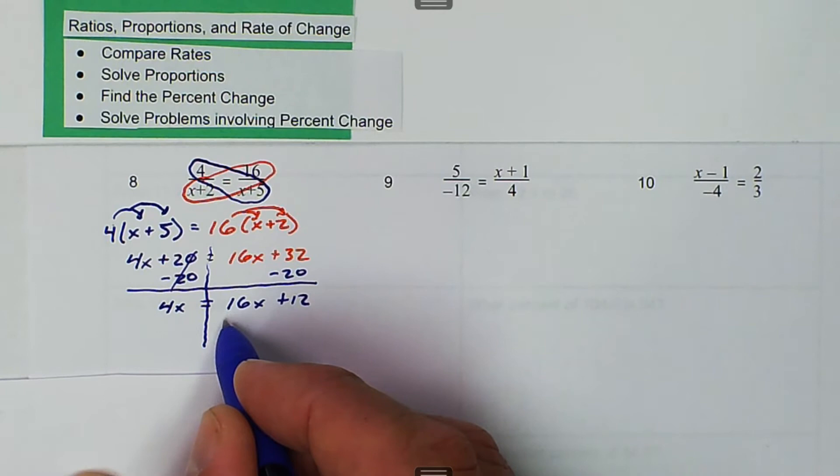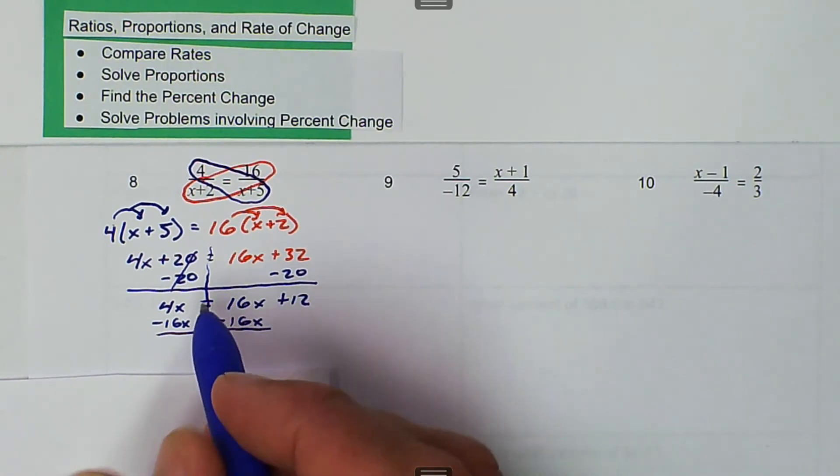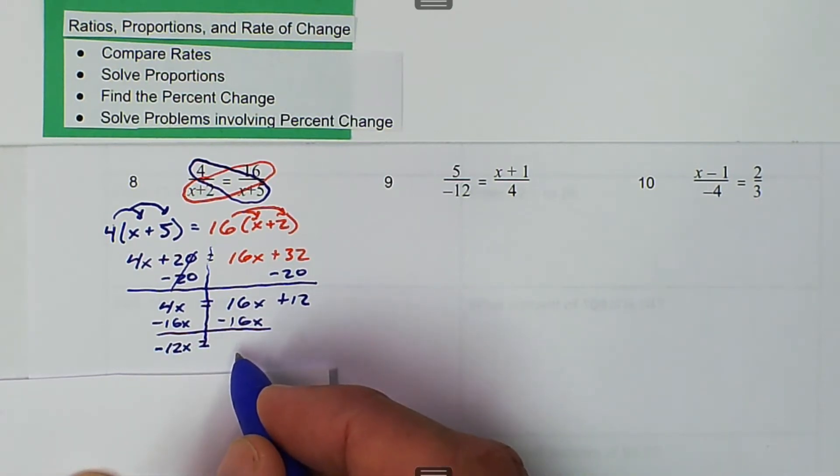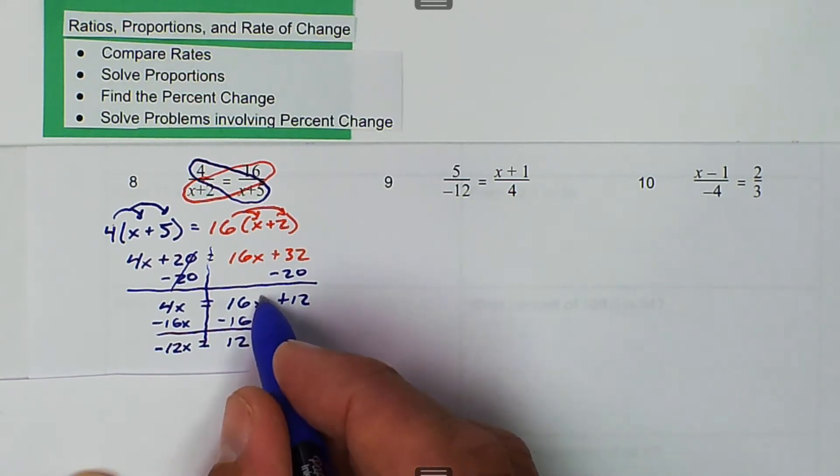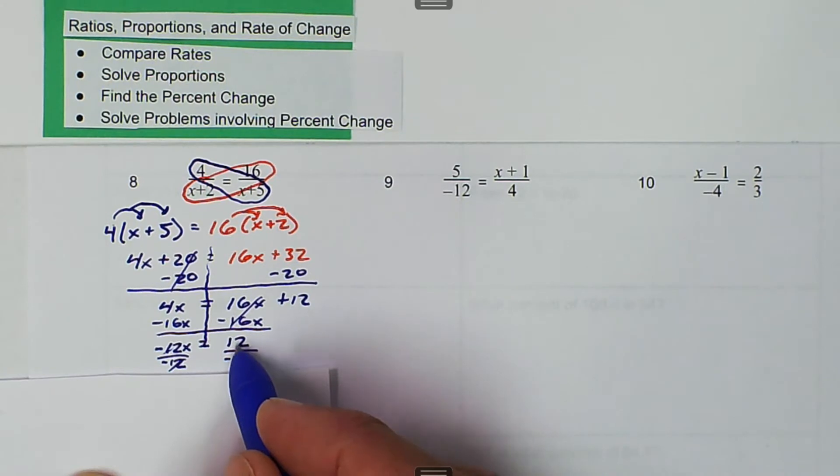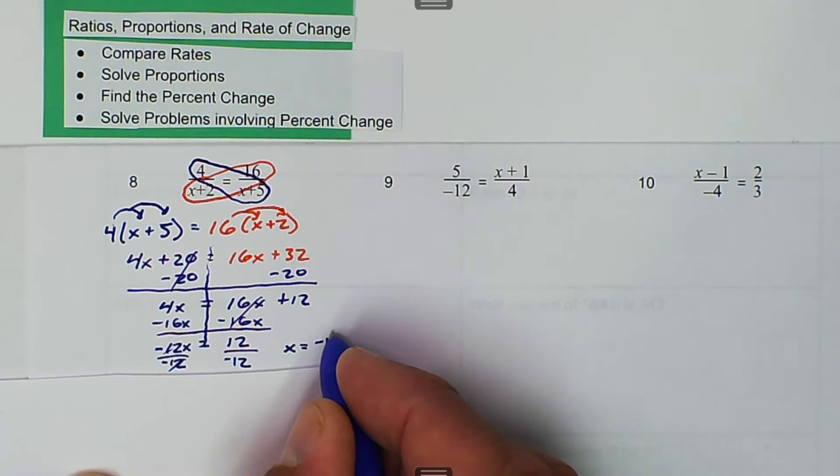Then we want to subtract 16x from both sides. And then we get negative 12x is equal to 12, because our negative 16 cancels. And then we're going to divide both sides by negative 12. Our 12s cancel, and 12 divided by negative 12 ends up being negative 1. So we get x is equal to negative 1.